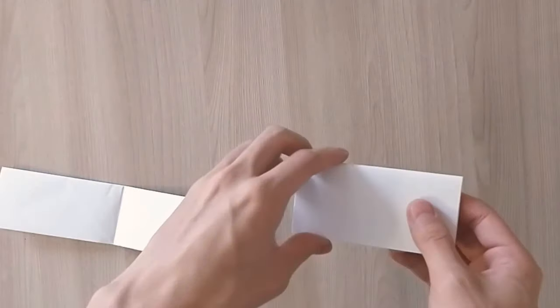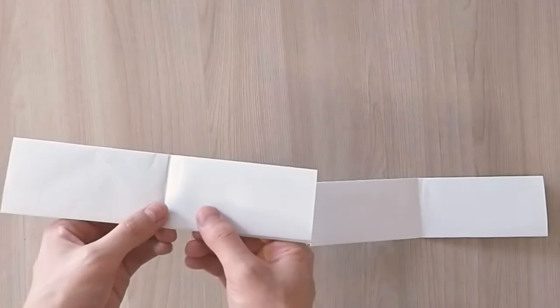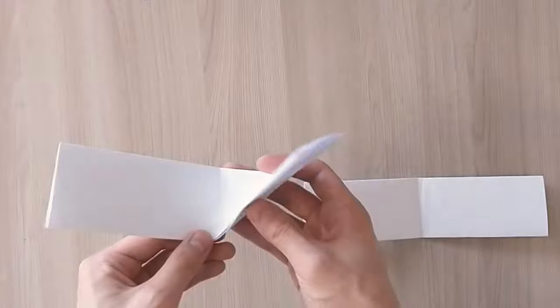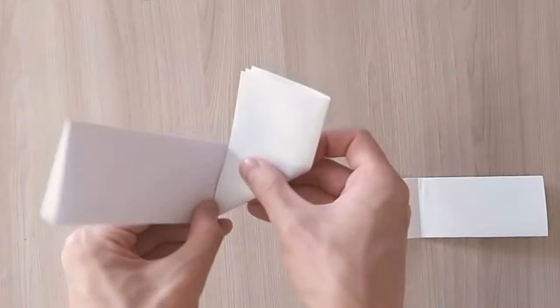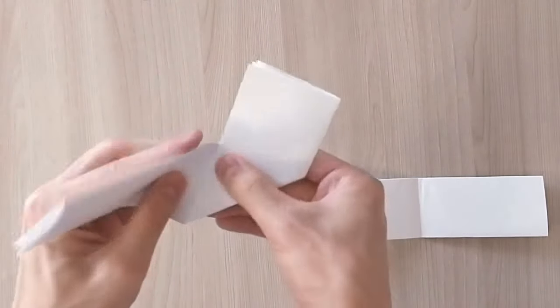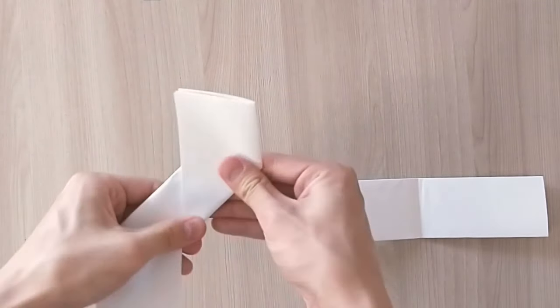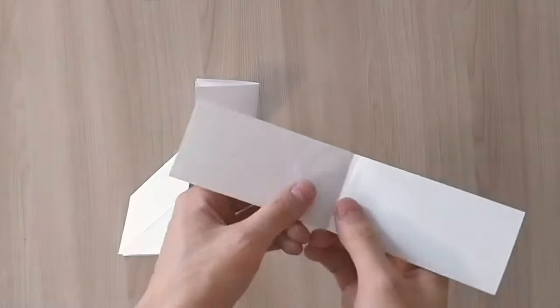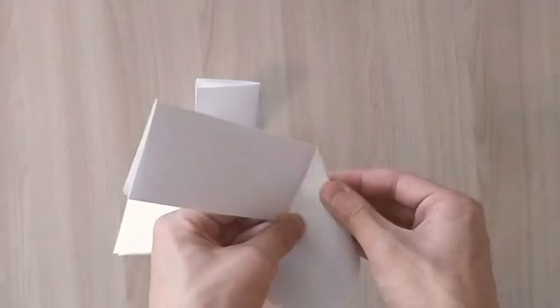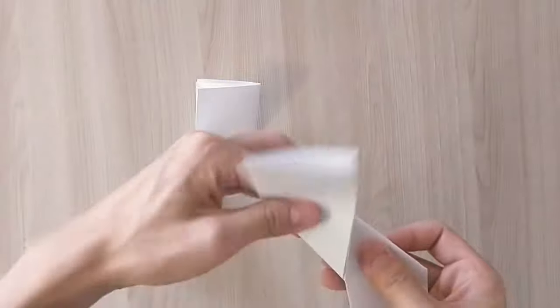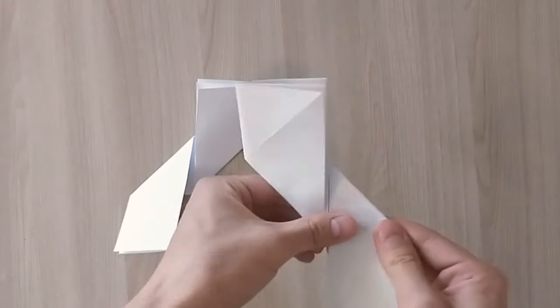From this point on, the folds that we're going to be making are going to be mirrored. So for your left piece, fold the edges to the center. We've made a line at the center and you're going to bring the ends towards the center. And for the other piece, do it the other way. You should have something like that.